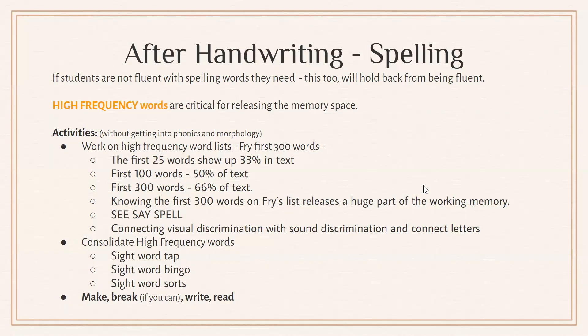Fry's first 300 words are very important: the first 25 words show up in 33% of the text out there, and the first 300 are found in 66% of our text. We want students to have a good repertoire of high frequency words — in kindergarten, by the end of the year, they can learn to spell words like 'the,' 'is,' 'mom,' 'dad,' 'dog,' and 'cat.' See-say-spell is an activity where students see a word, say the word, then spell the word, possibly writing it or spelling it with magnetic letters.